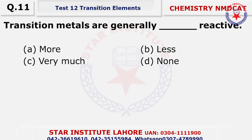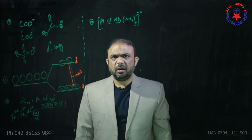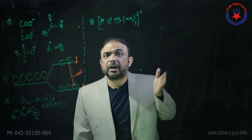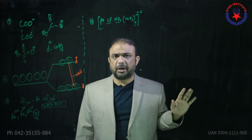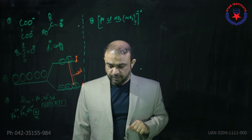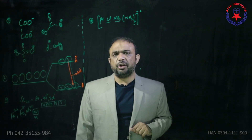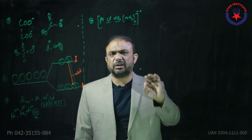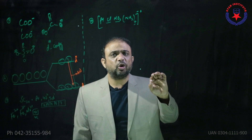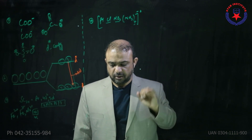Question number eleven: transition metals are generally less reactive — less reactive compared to alkaline earth metals, so these are less reactive. Question number twelve: which is used to identify the Cu2+ ion? The best possible answer is copper with sodium hydroxide — when Cu2+ is added to sodium hydroxide, copper hydroxide blue precipitates form, and colored precipitates are always preferred.